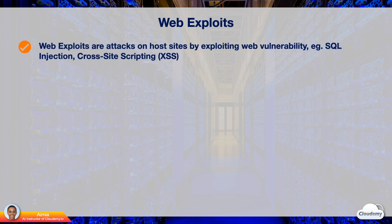Web exploits are cyber attacks where attackers attempt to gain control of host sites by attacking vulnerabilities or misconfigurations of websites, resulting in data leaks, database destruction, distributing malicious code, or sending spam. These attacks are usually at Layer 7, the application layer.